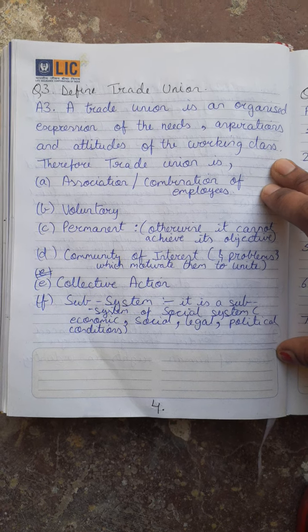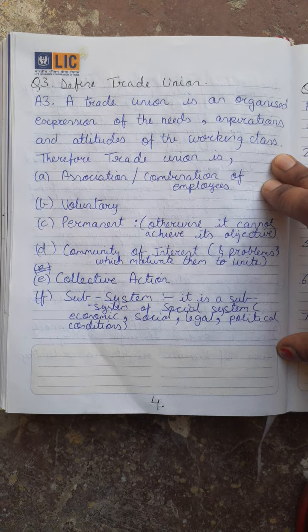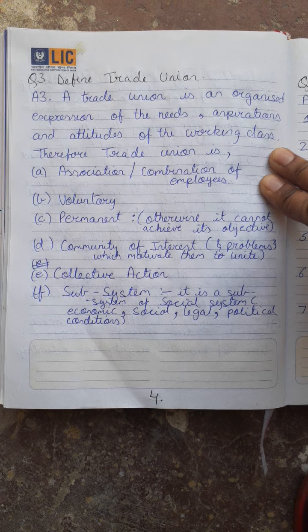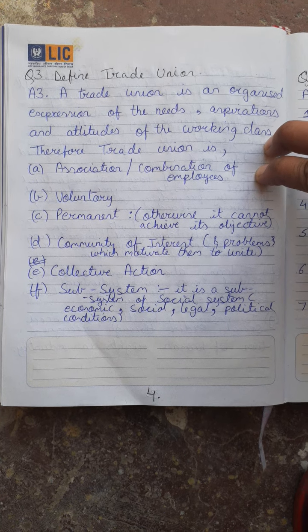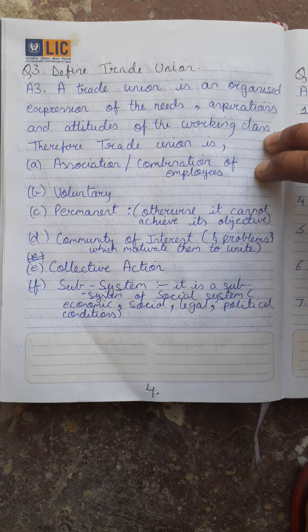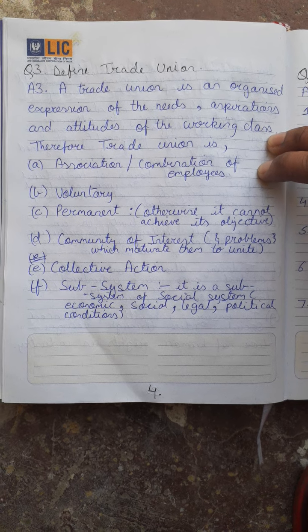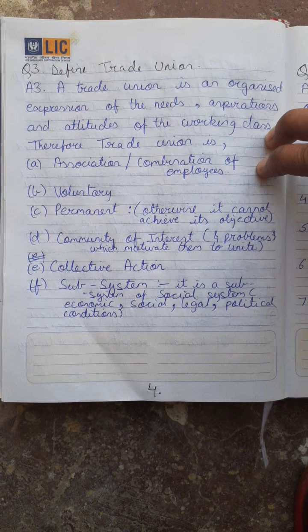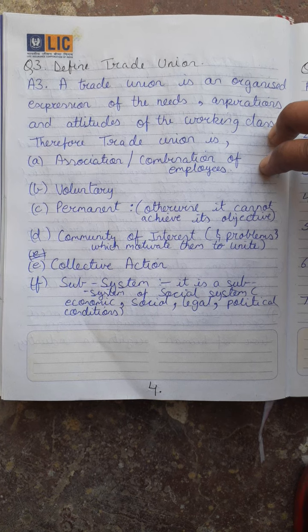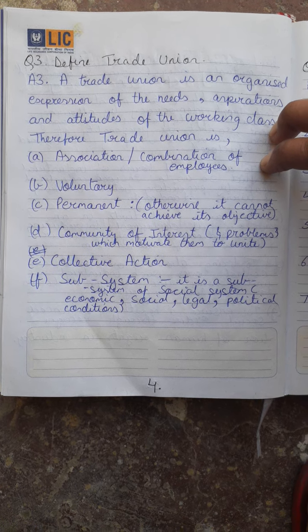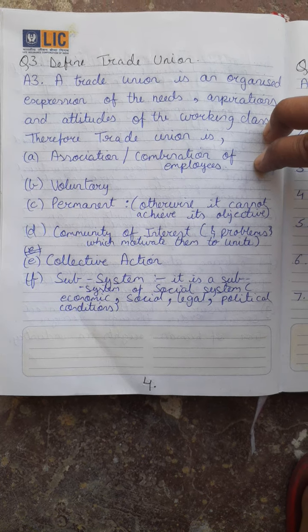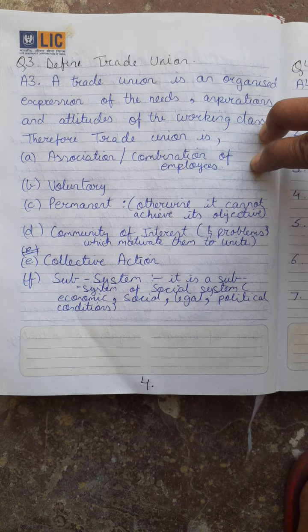Initially, workers were exploited by the management because they had limited legal protection or rights. Therefore, a trade union is basically an organized expression of the needs, aspirations and attitudes of the working class. A trade union is an association — a combination of employees — where employees voluntarily join, meaning they join of their own free will with no restrictions on their entry and exit. Trade union is permanent, and it is basically a community of interest, where people with the same or similar interests and problems unite.